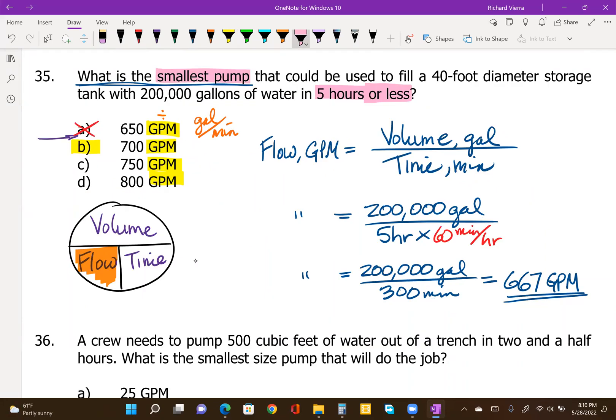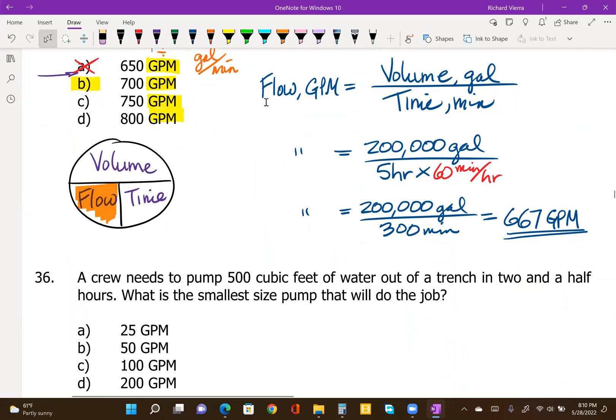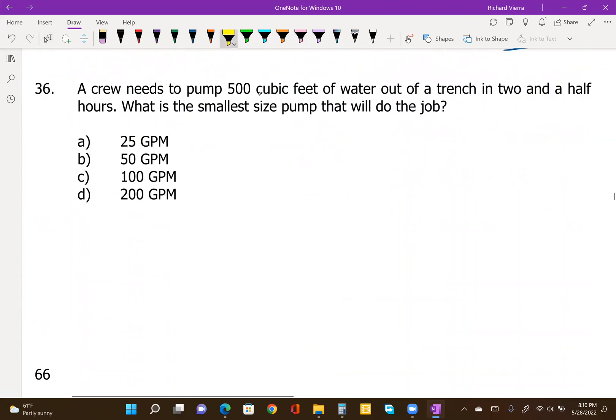Going on to number 36, which also has gallons per minute answers. Says crew needs to pump 500 cubic feet of water out of a trench in two and a half hours. What is the smallest size pump, so very similar terminology here, what is the smallest size pump that will do the job?